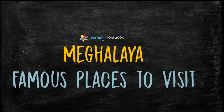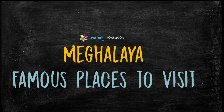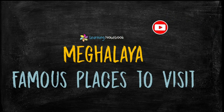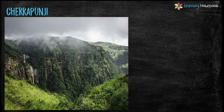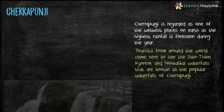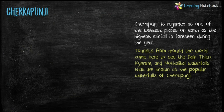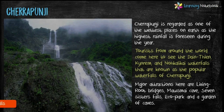Now let's learn about famous places to visit in Meghalaya. The first famous place is Cherrapunji. It is regarded as one of the wettest places on earth, as the highest rainfall is recorded here during the year. Banthalan, Kinram and Nohkalikai waterfalls are the popular waterfalls of Cherrapunji.